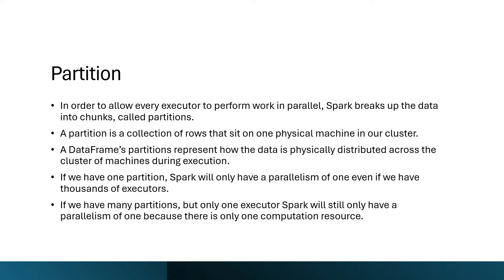If there is only one partition, Spark will only have a parallelism of one, no matter how many executors we have in the cluster. Even if there are thousands of executors, if the partition is only one, the parallelism is only one. Conversely, if there are many partitions but only one executor, the parallelism is also one because the executor can execute only on one partition at a time. Ideally, in a distributed setup, there are multiple executors, and the cluster manager decides which executors will participate, with data partitions assigned accordingly.